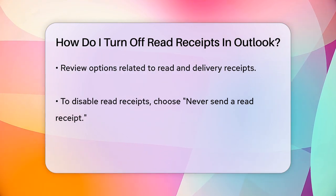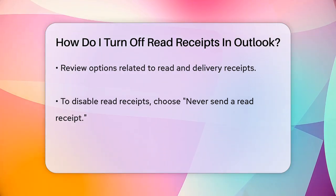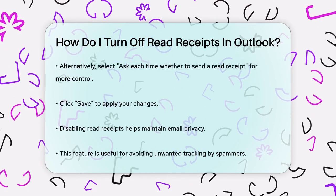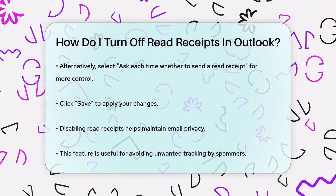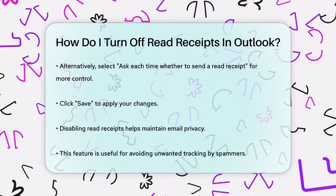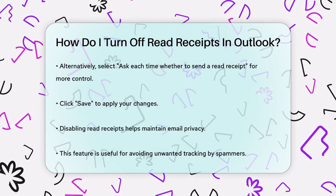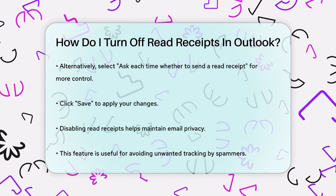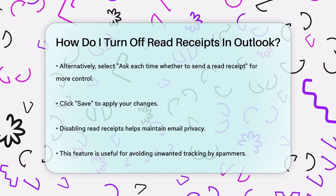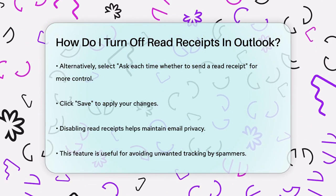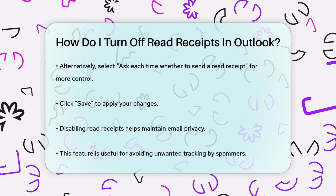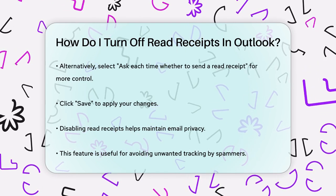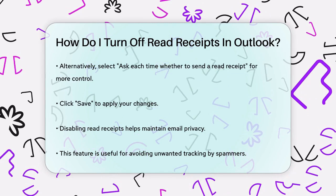Finally, don't forget to click Save to apply your changes. By following these steps, you can ensure that your email activities remain private and that you're not inadvertently sending out read receipts that could compromise your privacy. This feature is particularly important if you're concerned about spammers or anyone else tracking when you open your emails. So, take control of your email privacy today by disabling read receipts in Outlook.